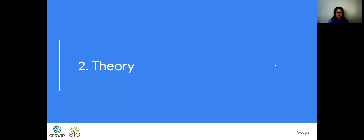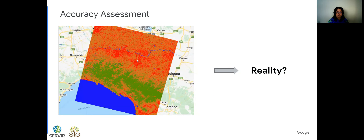A little bit about the theory of accuracy assessment. Every time we classify an image, like we did in chapter F2.1, we wonder how good is this map — how correctly classified are the pixels, and does this reflect reality? When working with remote sensing products, the output of a classification is just a generalization of reality. So if you're using this map for scientific purposes or policy making, we need to make sure that this map is good so people can take decisions based on it. We need high accuracy for important decision making.